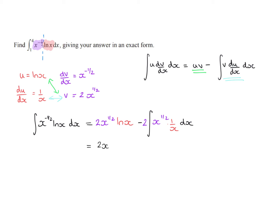So simplifying this, we have 2x to the half ln x for this portion here. And then we have the integral of 2x to the minus a half dx. We can then integrate the second portion: raising the power by 1 it becomes x to the power of a half, dividing by the new power of a half is the same as multiplying by 2, so we'll end up with a 4 here. We need to make sure we put in our limits at the end, because this was a definite integral.